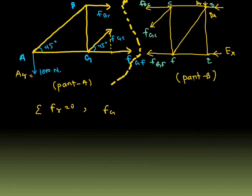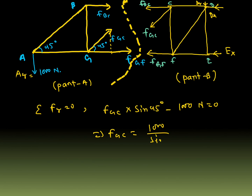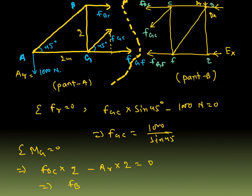For equilibrium of Part A: Ay is tensile in nature but acts downward, so it is negative. FGC times sin 45 acts upward, so it is positive. Setting FGC sin 45 minus Ay equals zero, with Ay equal to 100 N, you get FGC equal to 1000 divided by sin 45. Taking moment along point G in Part A and setting it equal to zero, you get the FBC value. FBC times 2 m minus Ay times 2 equals zero, so FBC equals Ay, giving FBC equal to 1000 N. Since it is positive, our assumption is correct — FBC is tensile.